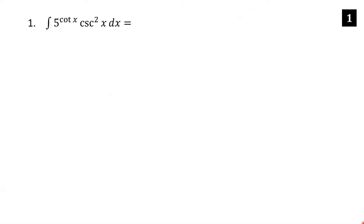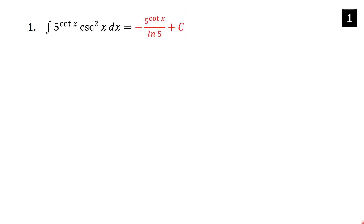The integral of 5 to the cotangent x times cosecant squared x dx. This is essentially just 5 to the u du, because the derivative of cotangent x is minus cosecant squared x dx. So all that's missing is the minus sign.